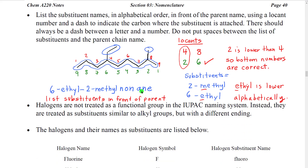When we're putting substituent names onto a molecule, we list the substituent names in alphabetical order in front of the parent name, and we have to put a locant number and a dash to indicate where the substituent is attached. Remember that any time we change from letters to numbers, we have to put a dash. We should always have a dash between a letter and a number, and we don't put spaces between the substituents and the parent chain name.